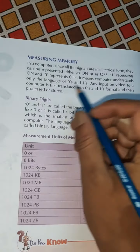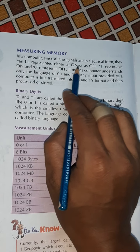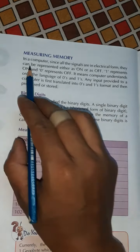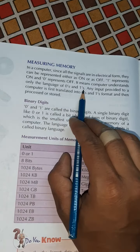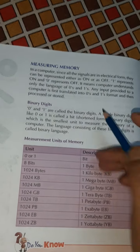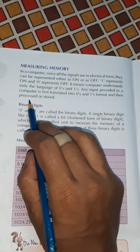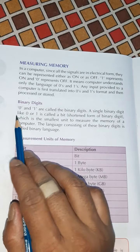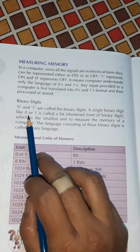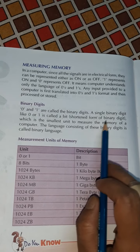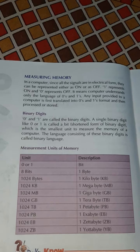Measuring memory in a computer: all signals are in electrical form and can be represented as either on or off. One represents on and zero represents off — this means a computer understands only the language of zeros and ones, which is called binary language. Any input provided to a computer is first transferred to zeros and ones format and then processed or stored. A single binary digit — zero or one — is called a bit, which is the smallest unit of memory.